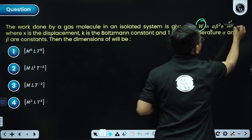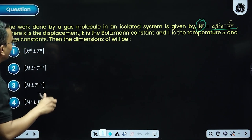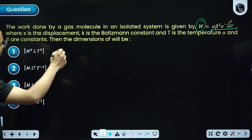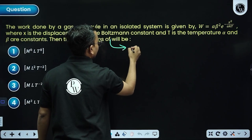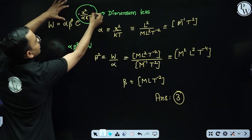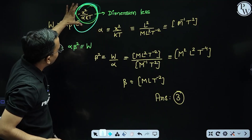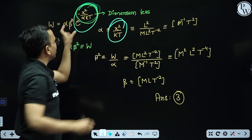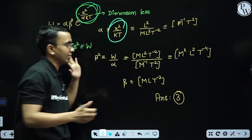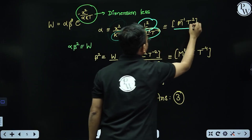Second question: the expression for work done is given in terms of alpha, beta, the Boltzmann constant k, and temperature. We need to find the dimensions of beta. The exponent is dimensionless, so e to the power is also dimensionless. From that, the dimensions of alpha equal x² divided by kT. Since kT has dimensions of energy and x² is displacement squared, I got the dimensions of alpha.